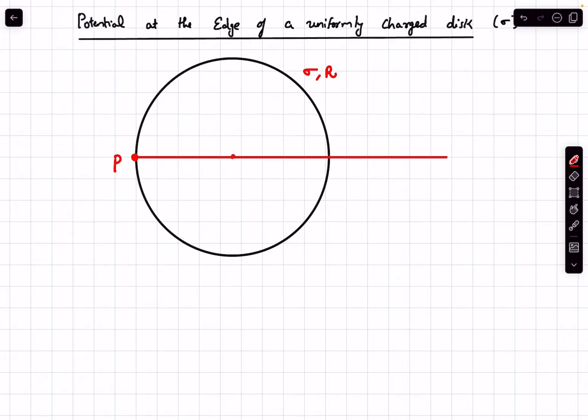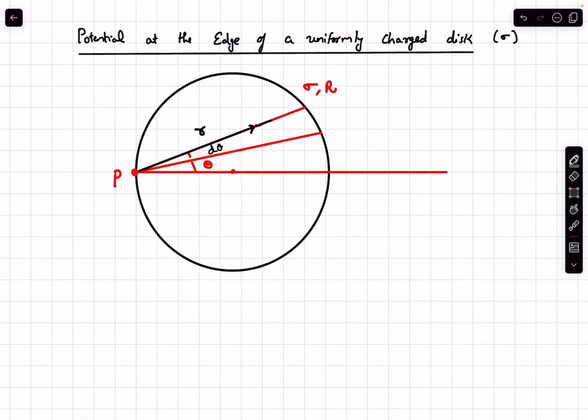Now the first step is we have to take a differential element on the disk. We first move an angle of θ in any direction and we move further by a small angle of dθ. I purposefully exaggerated the diagram in order to explain it. Now what we are doing is move a distance of r along this element and move a differential distance of dr forward.